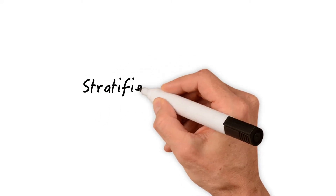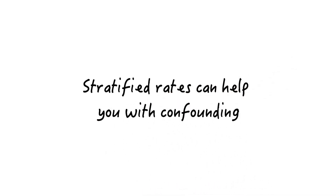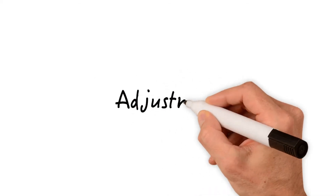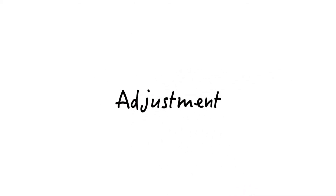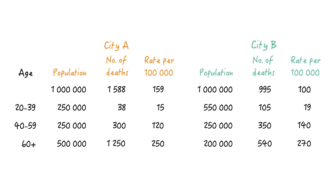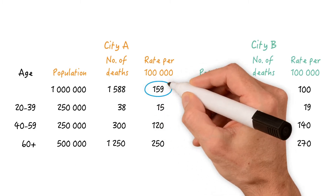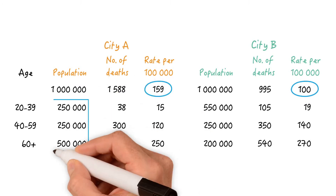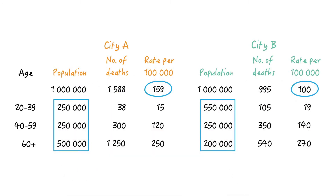In the previous lesson, we learned that comparing stratified rates can help you with confounding. Another method that's often applied when comparing rates in different populations is called adjustment. Let's go back to a previous example of death rates in cities A and B. The overall death rate was higher in city A due to its older age distribution, whereas the age-stratified mortality rates were actually higher in city B.